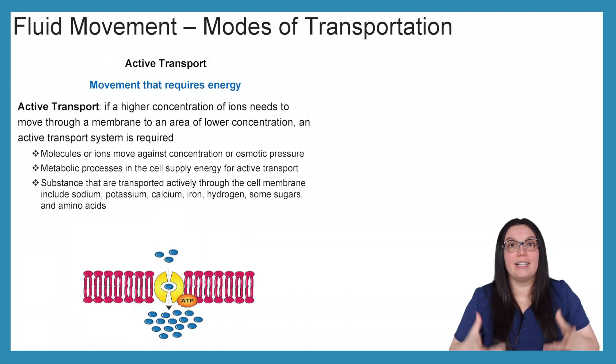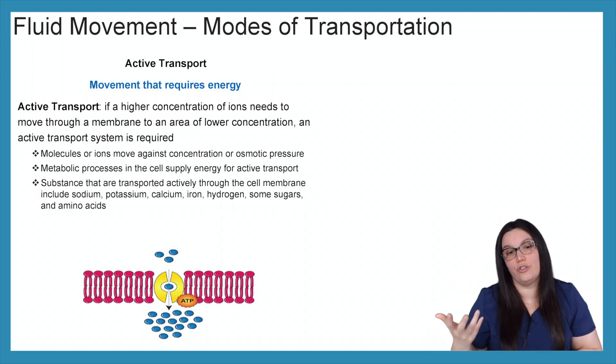Lastly we're going to look at active transport. This is the movement that requires energy. With active transport, if a higher concentration of ions needs to move through a membrane to an area of a lower concentration of ions, then an active transport system is required. Molecules or ions move against concentrations or osmotic pressure. Metabolic processes in the cells supply energy for the active transport and substances that are to be transported actively through the cell membrane include sodium, potassium, calcium, iron, hydrogen, some sugars and amino acids.